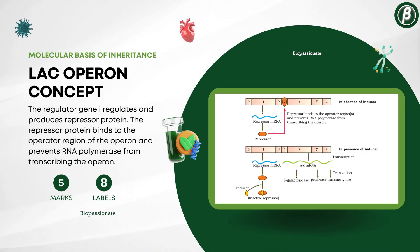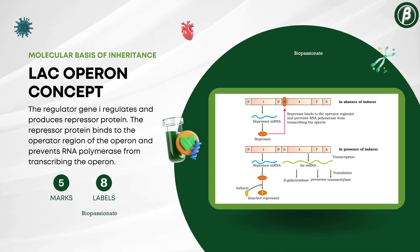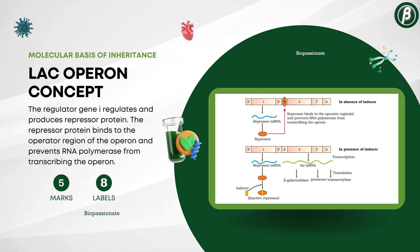Number 11: The male reproductive system, for 5 marks with a minimum of 8 labels.